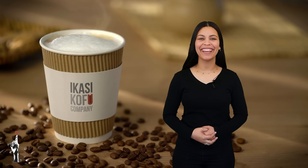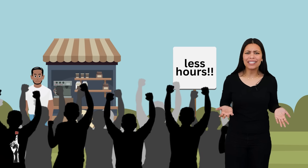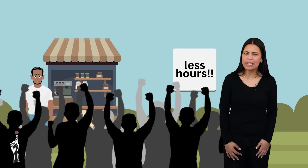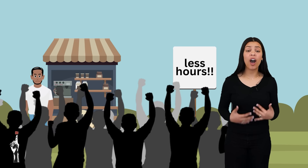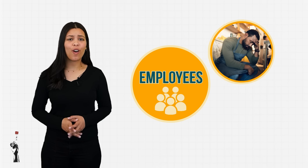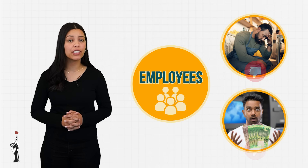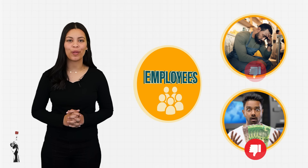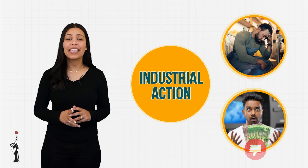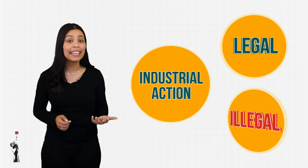Let's go to Ikasi Kofu Company. What is all that noise about? The employees don't seem very happy — they're striking! It seems as though the employees are not happy about their long hours of work and very little remuneration. Grade 9s, this is an example of industrial action. There are two types or categories of industrial action, namely legal and illegal industrial action.